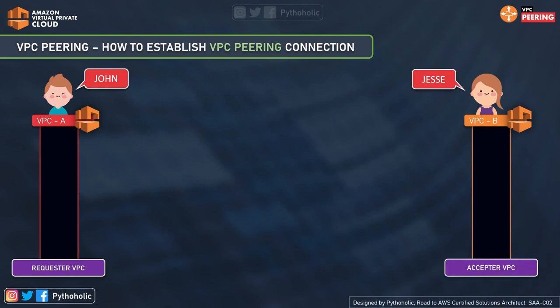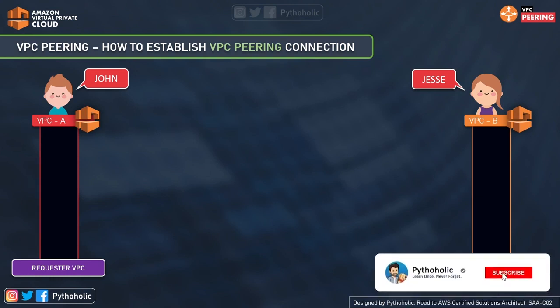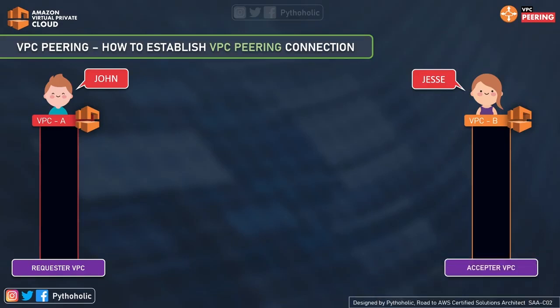Let's talk about how to establish a VPC peering connection. Here we have John and Jesse, both owners of a VPC, working on products with dependencies on each other. They decided to use VPC peering. John is the requester VPC owner who makes a request, and Jesse is the owner of the acceptor VPC. When you create a VPC peering connection, there must be a requester who sends a request to another VPC to accept the peering connection.